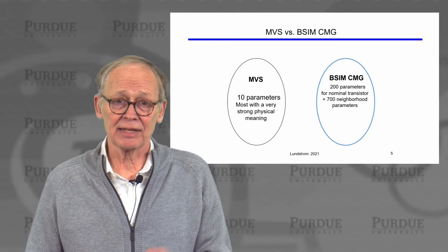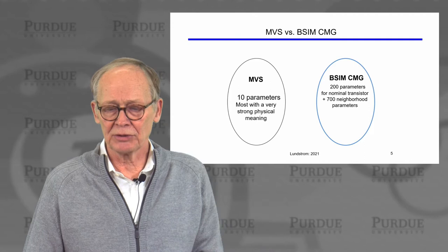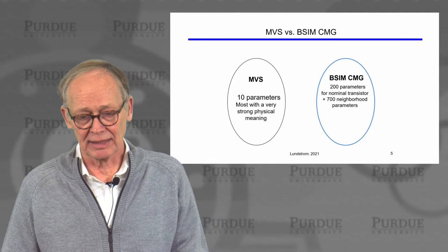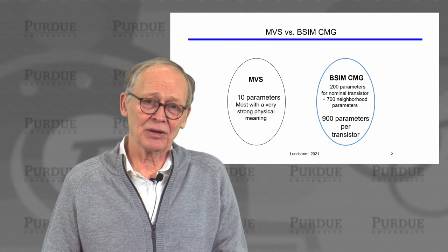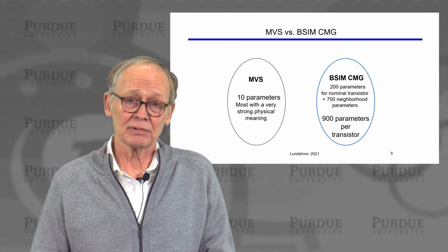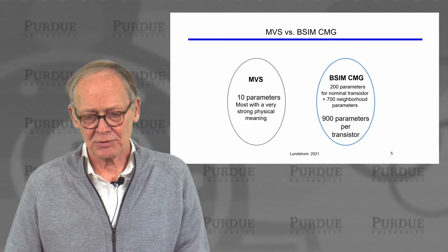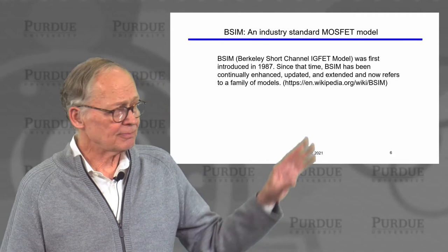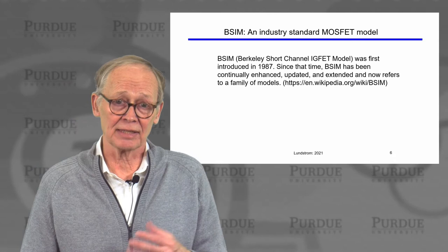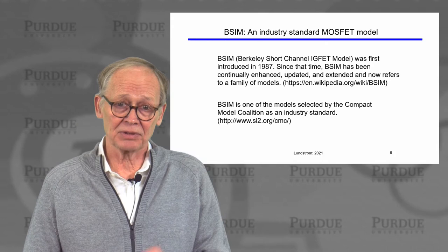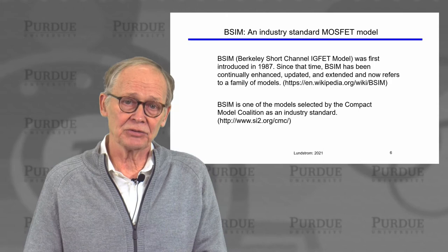BSIM-CMG — a multi-gate model — is an industry-strength model. The MVS model has 10 parameters; there are 200 parameters for the nominal transistor itself in the BSIM model, and then an additional ~700 or so to describe all of the neighborhood dependencies of the surrounding environment for this transistor — almost a thousand parameters per transistor. But this is what is needed to do reliable, accurate circuit design with modern technology. BSIM is an industry standard model that has been continually evolving and updated as technologies evolve. It has been selected by the semiconductor industry as one of its industry standard models. Years ago every company used to develop its own model, but as models became extremely sophisticated it became impractical. So the industry has focused on a small set of shared standard models, and all commercial circuit simulation platforms will have these industry standard models available inside them.